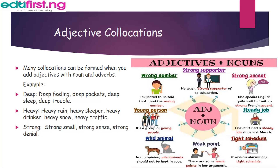The second type of collocation is adjective collocations. Many collocations can be formed when you add an adjective with a noun. Examples include: deep — deep feeling, deep pockets, deep sleep, deep trouble. Another example is heavy — heavy sleeper, heavy drinker, heavy traffic. Another one is strong — strong smell, strong sense, strong denial. There are lots of examples for adjective collocations.